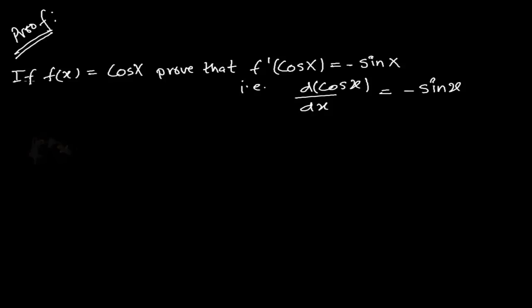Hi friends, here in this video we are going to find the derivative of the function cos x. In the previous video we learned to find the derivative of sin x and got the result that the derivative of sin x is equal to cos x. Now we are going to prove that the derivative of cos x is equal to minus sin x.